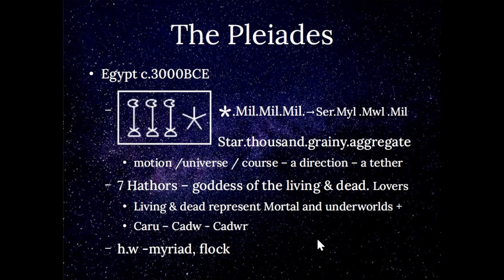The seven Hathors, goddess of the living and dead, represent the mortal world and the underworld. The position of the Pleiades near the ecliptic is key: above the ecliptic is the mortal world, beneath is the underworld. As discussed with the Babylonian pantheon, this may result from observations of pole shifts or observations over a very long period. 'Love' is 'kari,' implying 'kadu' — to care — which is also the word for a flock. 'Kadwyr' is a fighter or warrior, which we had in the Mesopotamian pantheon.